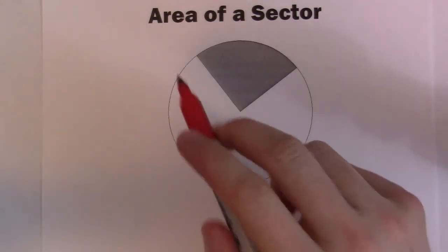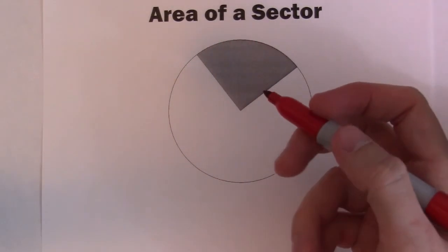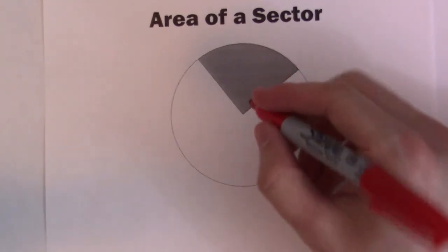In this video, I'm going to talk a little bit about area of a sector. A sector is a piece of a circle, almost like a pie piece.